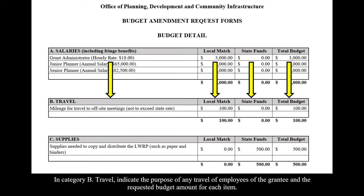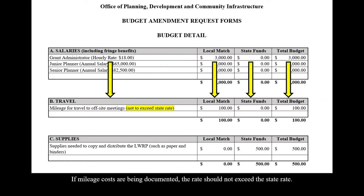In Category B, Travel, indicate the purpose of any travel of employees of the grantee and the requested budget amount for each item. If mileage costs are being documented, the rate should not exceed the state rate.